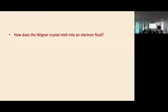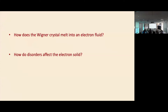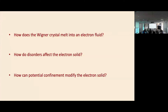How does the melting happen when you go from the Fermi liquid case to the Wigner Crystal solid? And for experimentalists, unavoidably there are disorders in real materials. How does disorder affect this liquid-solid transition and the general behavior of the Wigner Crystal electron solid? Furthermore, with two-dimensional materials, we can controllably create potential fluctuations. How would this electron solid behavior change with well-defined potential confinement?